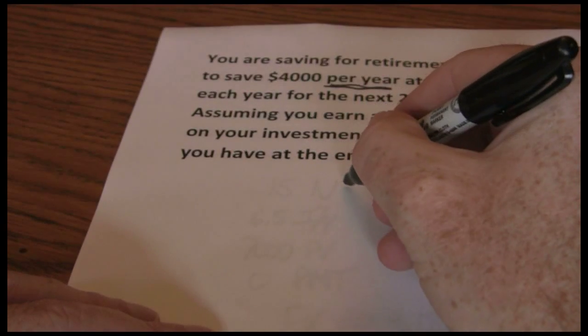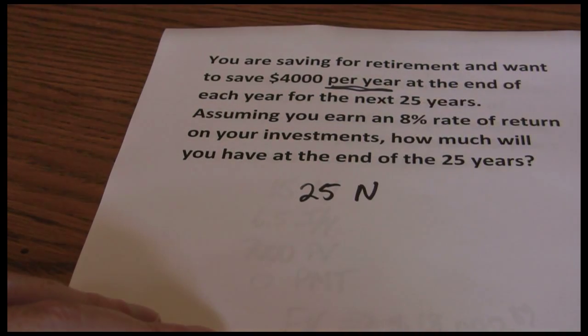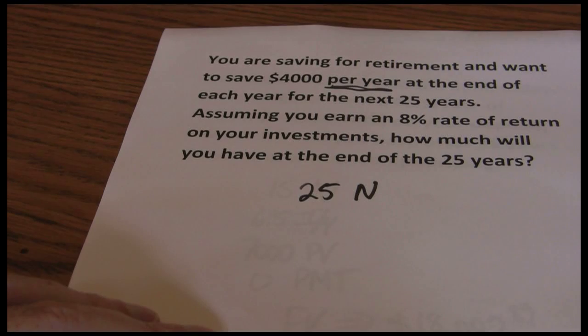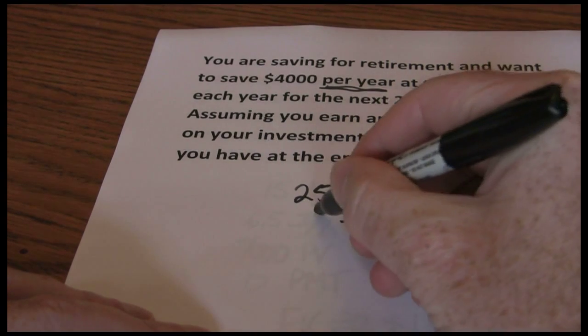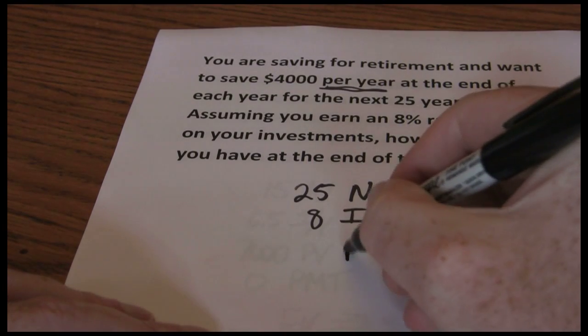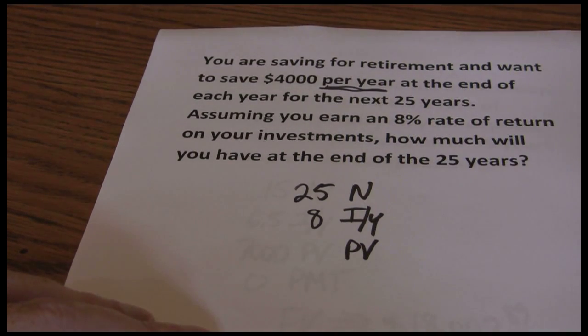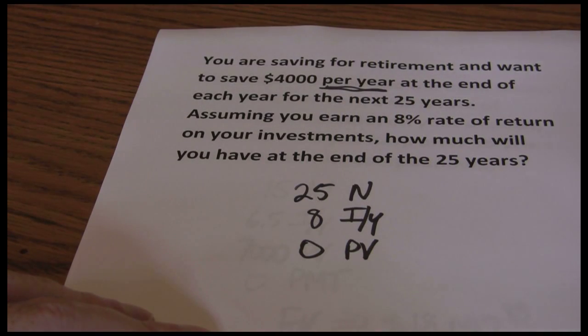So again, it's just a matter of the five key approach. We want to know how much we're going to have at the end of 25 years. So 25 is our N. We were earning an 8% rate of return. So 8% is our I/Y. Our present value, in this example, we're starting out with nothing. So we zero out the present value.